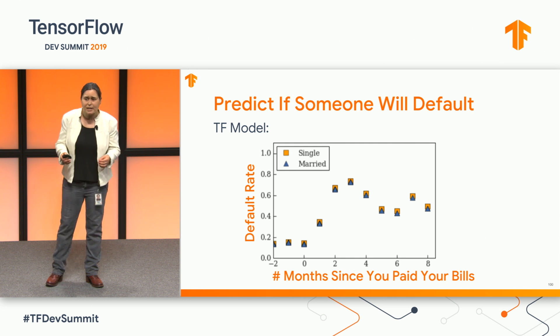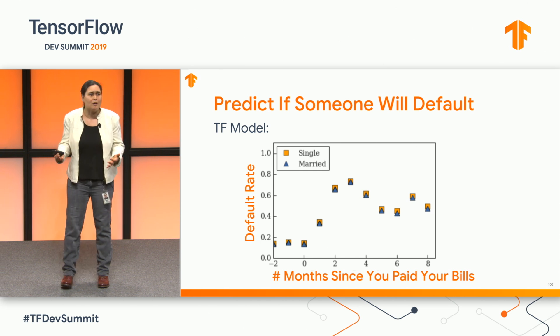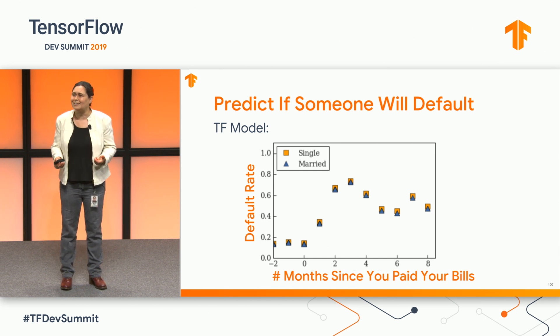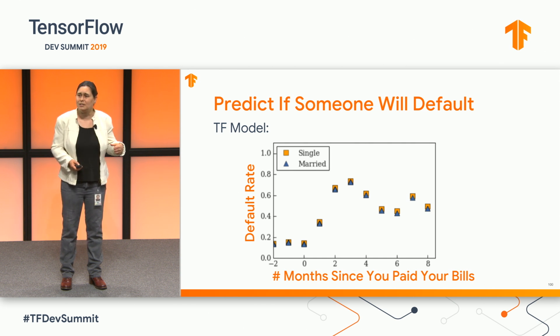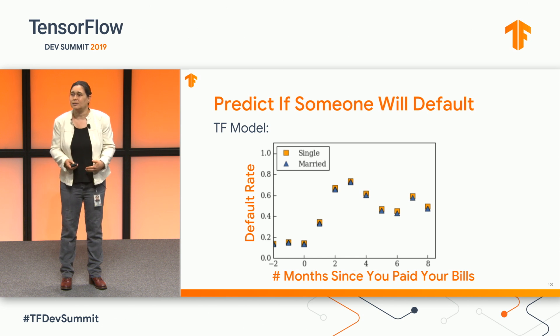So what can we do? We might say this is sort of overfitting — let's just regularize. But any of your standard regularization techniques are going to be problematic. It's going to be hard to really fix this without hurting your model accuracy, and it's going to be hard to even check if you really fixed it.